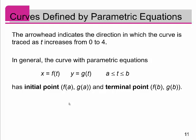In general, the curve with parametric equations x equal to f of t and y equal to g of t on some interval from a to b has the initial point f of a, g of a, and we call the ending point the terminal point f of b, g of b.